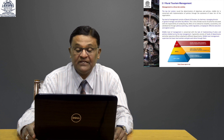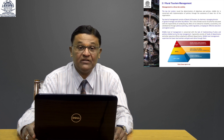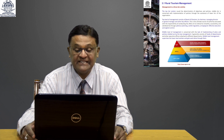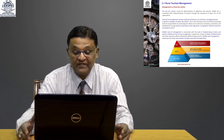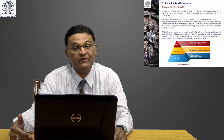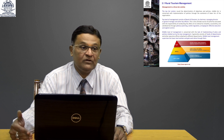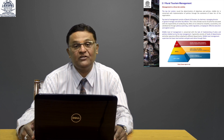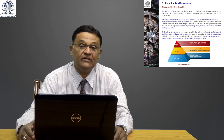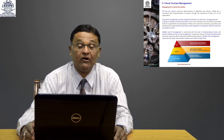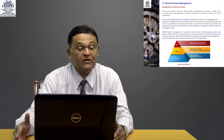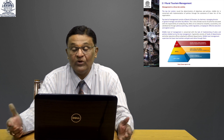Middle level management is concerned with implementing the plans and policies chalked out by top management. It generally consists of heads of departments and executives attached to different departments. All three levels — top, middle, and lower — work in an integrated way. It is all about team management: how teams collaborate, share information, maintain transparent communication, and ensure accountability at every level so that implementation happens at the grass root level.